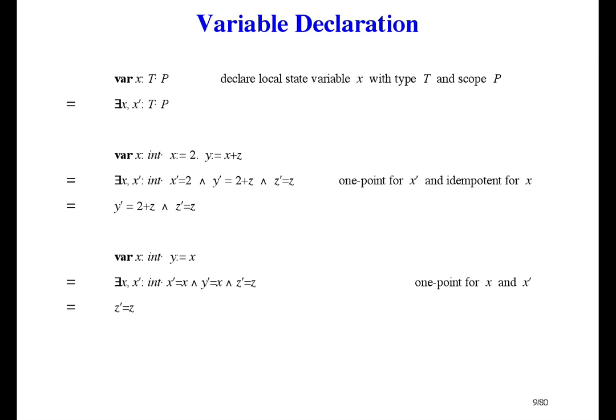This kind of declaration gives us a local variable whose initial value is arbitrary, and presumably it's the garbage left in that storage location from its previous use. But we can still use it. For example, var x and then y gets x minus x works out to be y prime equals 0, and z is unchanged.